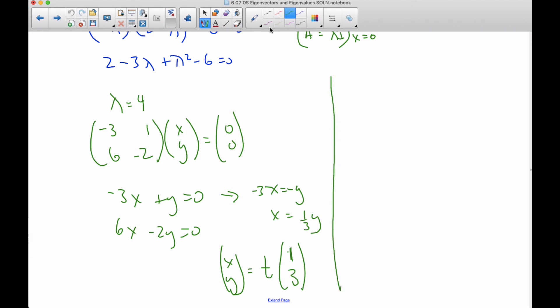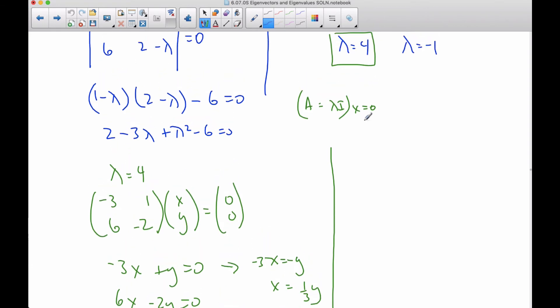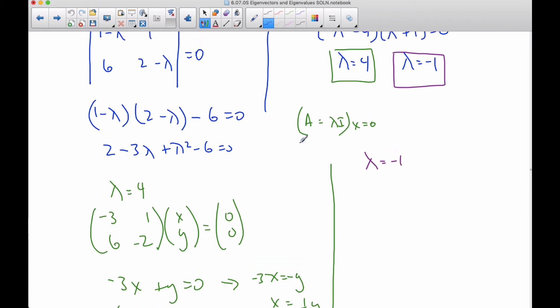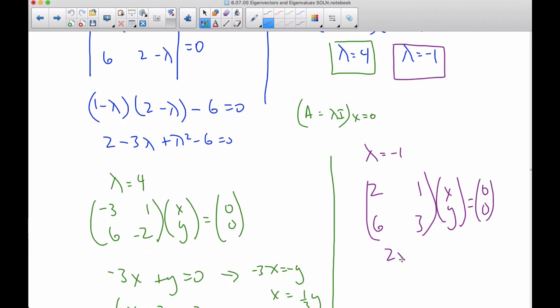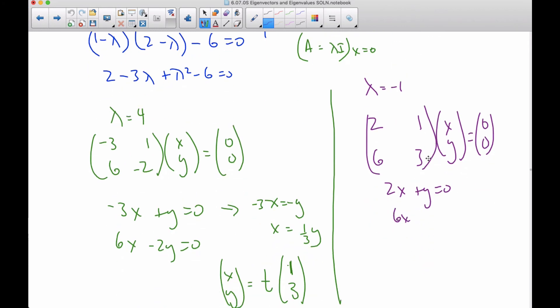Similarly, if I'm going to do the other eigenvalue, if I do lambda is negative one, plugging it into this particular matrix here, gives me two, one, six, and three. So then when I make this equation, I get two X plus Y is zero, or six X plus three Y is zero.